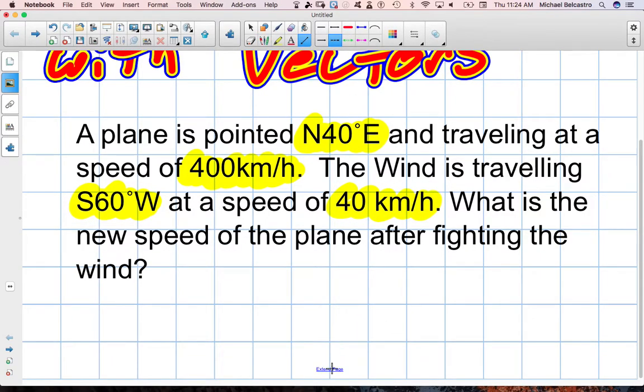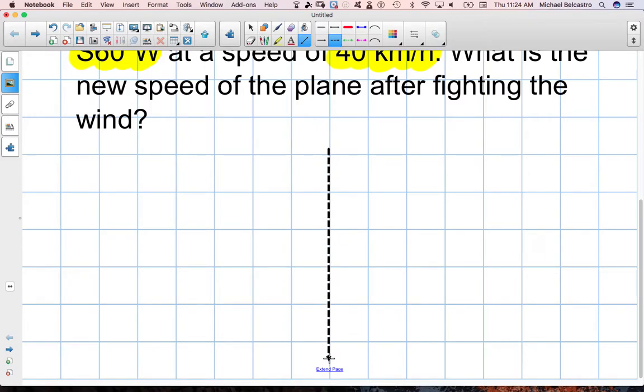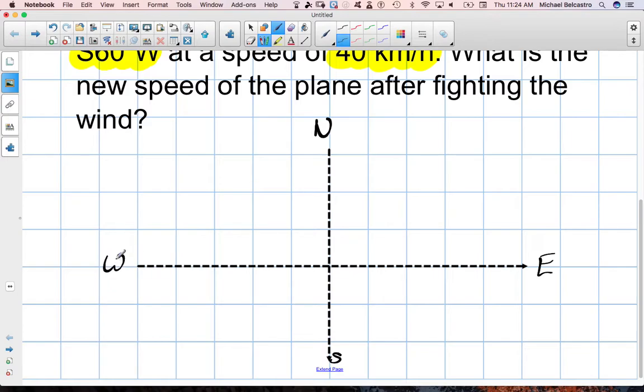I'm going to draw the Cartesian plane here. We're going to add some things to it. We're going to call upwards north, heading downward south, heading to the right east, and heading to the left west. On a two-dimensional plane, this is usually how we see things.